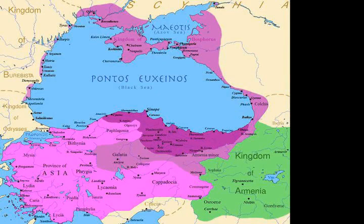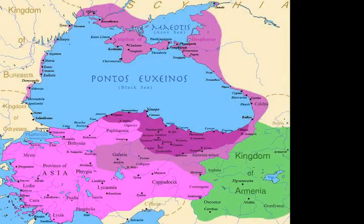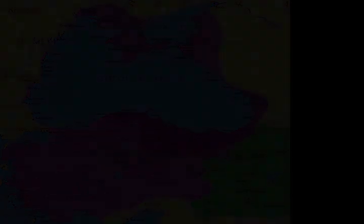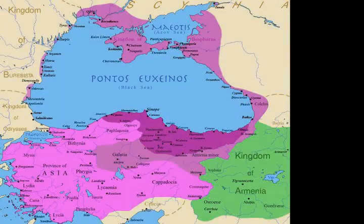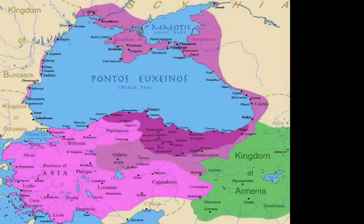In 87 BC, Gaius Antonius Hybrida accompanied Sulla during his campaign to Greece as a military tribune. Sulla had left Rome after ending an uprising to face the Mithridatic Greek army commanded by Archelaus and Aristion in Greece, and laid siege to Athens. Following this campaign, while Sulla returned to Rome, Hybrida remained behind with a small cavalry contingent to levy contributions from the province of Achaia.